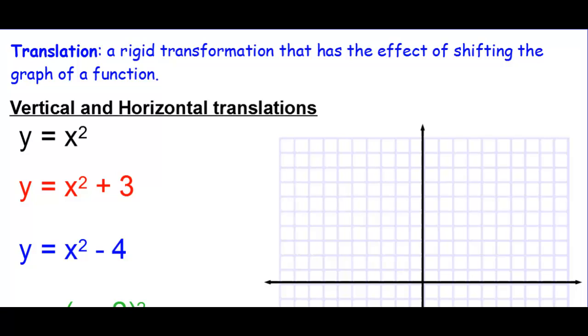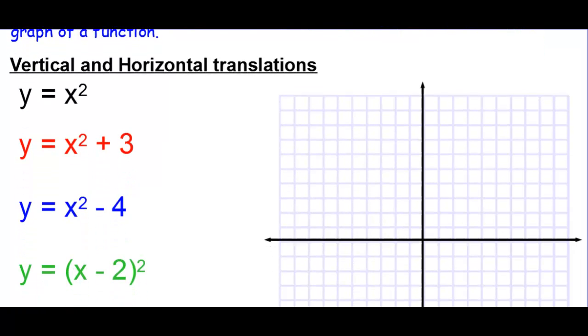Translation is a rigid transformation that has the effect of shifting the graph of a function. We have vertical and horizontal translations.